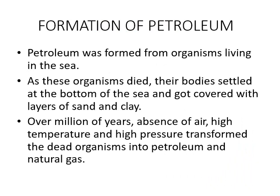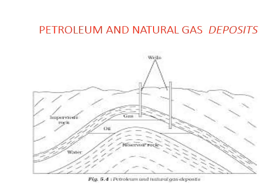Let us talk about the formation of petroleum. Petroleum was formed from living organisms in the sea. As these organisms died, their bodies settled at the bottom of the sea and got covered with layers of sand and clay. Over millions of years, the absence of air, high temperature, and high pressure transformed the dead organisms into petroleum and natural gas. Here you can see the reservoir of rock where petroleum is formed and natural gas above the petroleum.